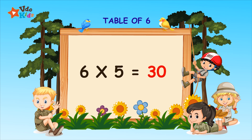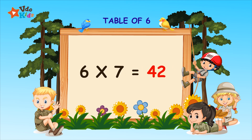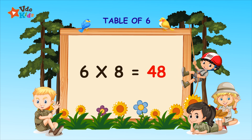Six fives are thirty. Six sixes are thirty-six. Six sevens are forty-two. Six eights are forty-eight.